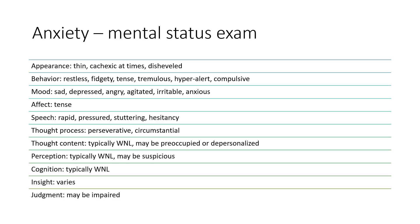On your mental status exam, look at their appearance — are they thin, cachectic, disheveled? Their behavior when they're with you — are they restless, fidgety, tense, tremulous, hyper-alert, compulsive? Their mood — are they sad, depressed, angry, agitated, irritable, anxious? Their affect — is it tense? Is their speech rapid, pressured, stuttering? And their thought process — be mindful of what a typical mental status exam looks like for someone with anxiety.